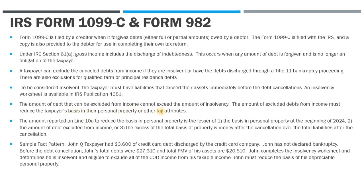The amount of debt that can be excluded using the insolvency exception cannot exceed the amount of your insolvency. However much your liabilities exceed your assets is the cap on the amount of debt you can exclude from income. In some cases it's greater and you can exclude everything; in other cases it's a smaller margin and you can only exclude some. Once you exclude these debts from income, you have to reduce your basis in your personal property or other tax attributes — your house, car, furniture, clothes, and other items.